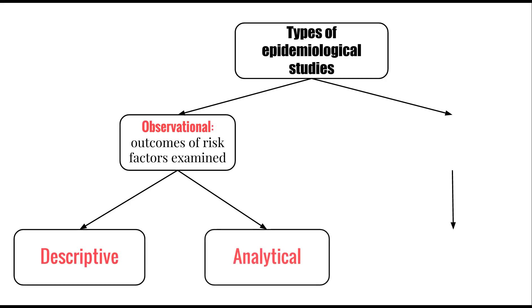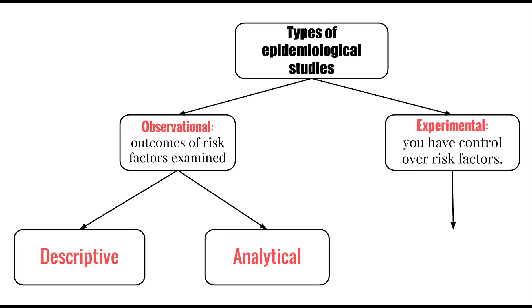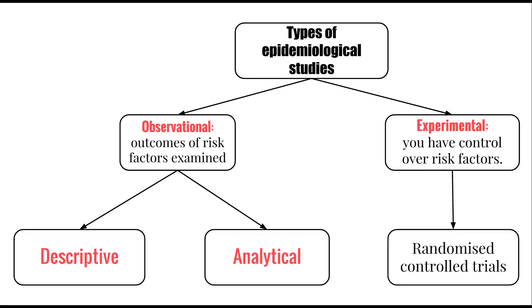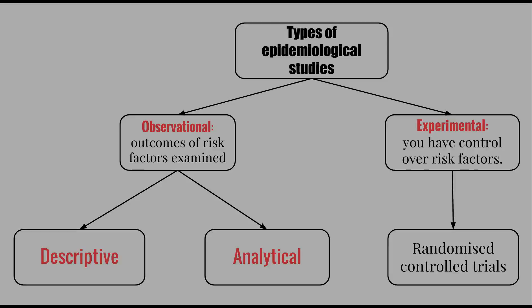Observational studies can be descriptive — meaning they're just describing risk factors — or analytical, which takes it a bit further. We could also have experimental epidemiological studies where those carrying out the studies control the risk factors. By limiting all other risk factors, we can determine whether one particular risk factor is the cause of the disease, and this can be carried out by randomized control trials.